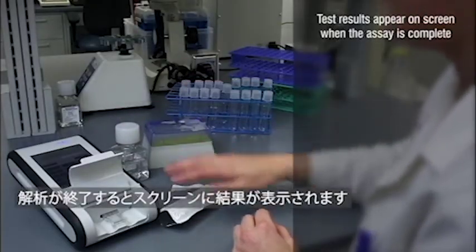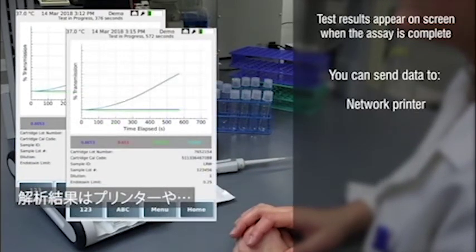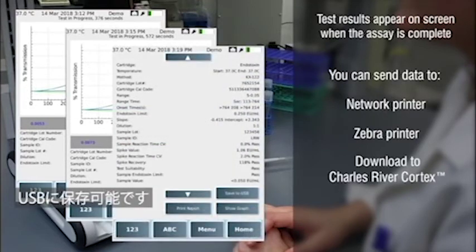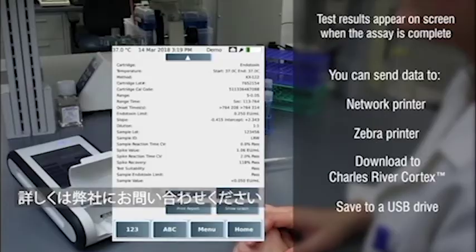Test results will appear on the screen when the assay is complete. You can send this data to a network printer, zebra printer, download to Charles River Cortex, or save to a USB drive.